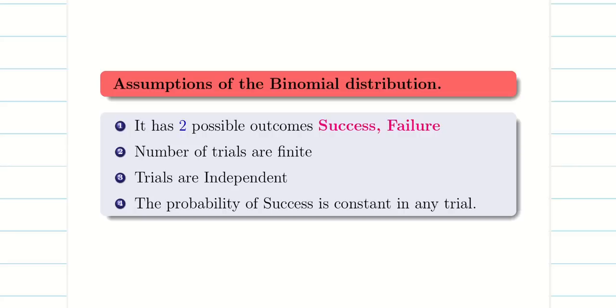If success is constant, then failure is also constant by default since p plus q equals 1. Let us now go to the properties of binomial distribution.